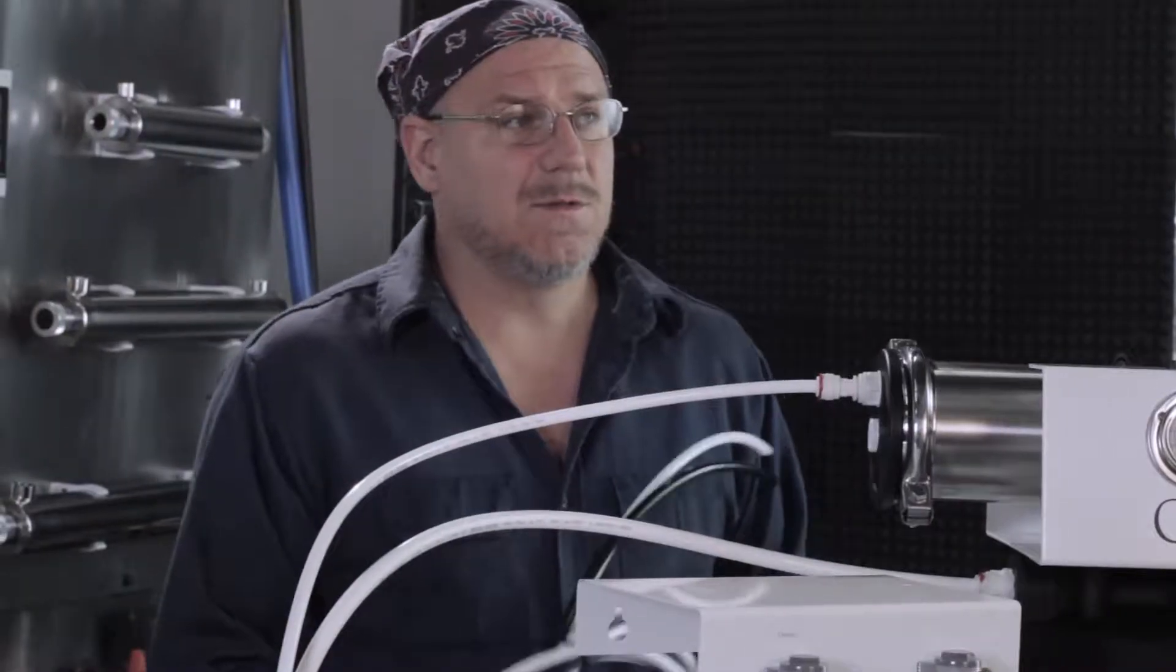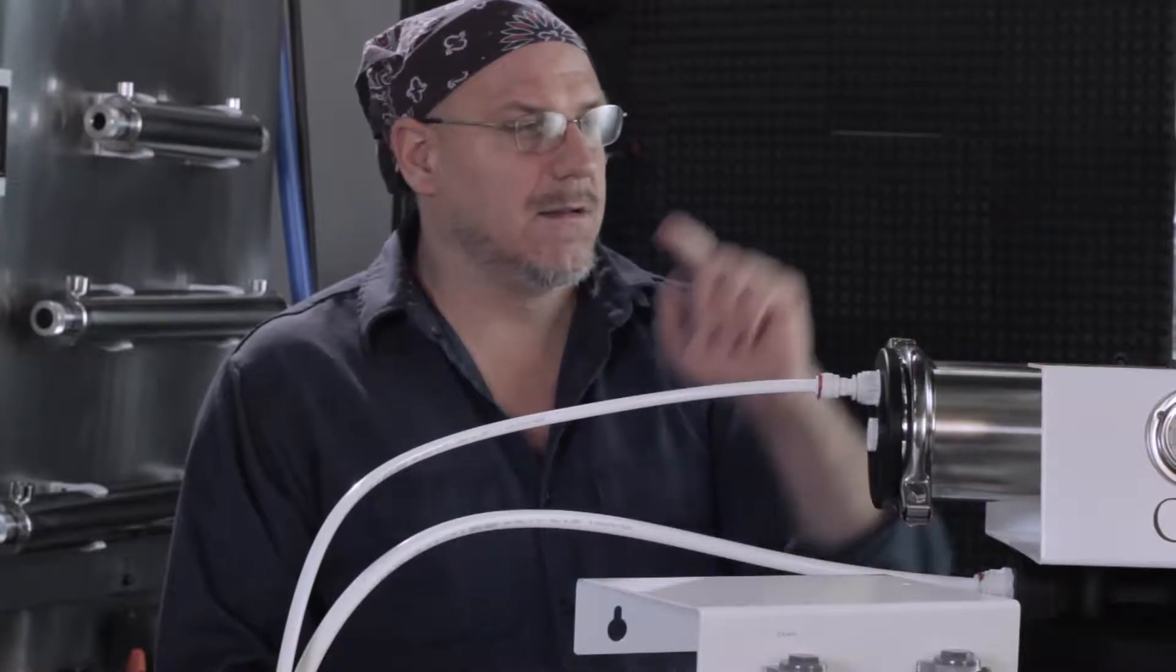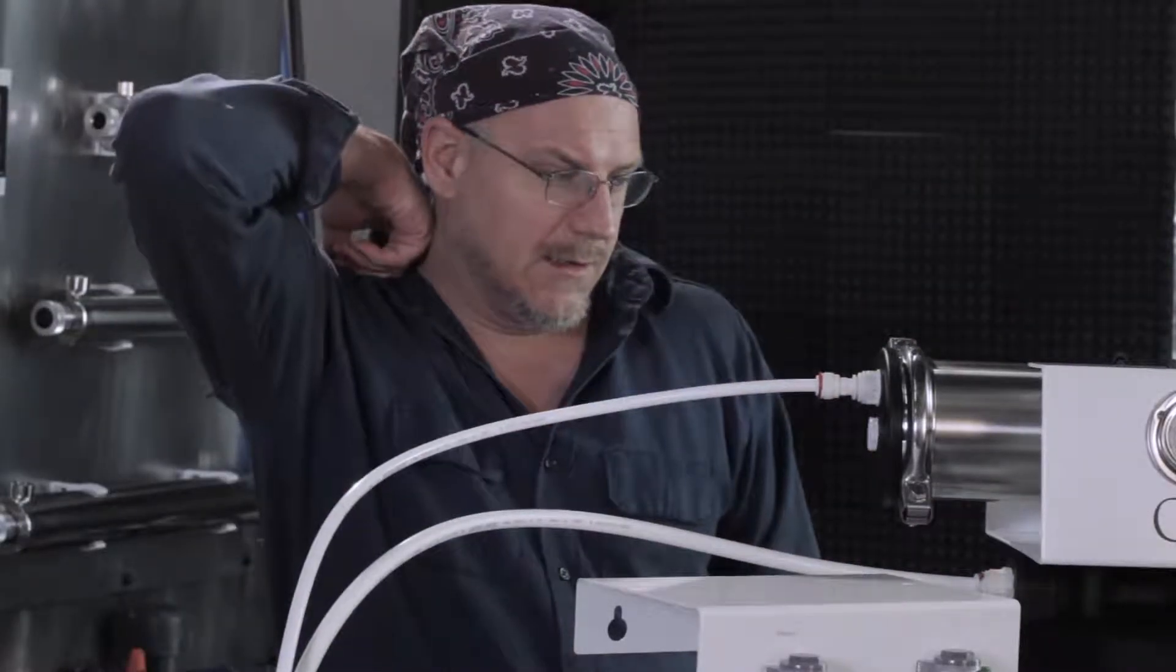The Flowbox comes with 10 feet of tubing, black and white, to connect from the membrane to the Flowbox and back out, and we're going to show you how this works.